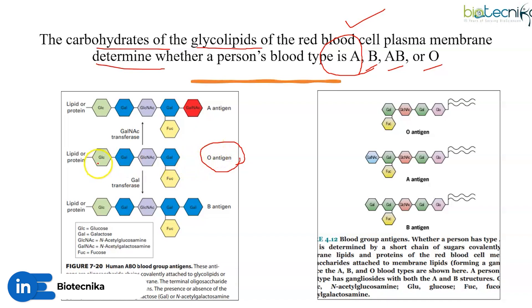O antigen, as you can see, is made up of one glucose, two galactose, one galactose in a connecting link with fucose, and one N-acetylglucosamine. If a person carries the A antigen, they will be having N-acetylgalactosamine as an extra component. The enzyme responsible for this addition is N-acetylgalactosamine transferase.